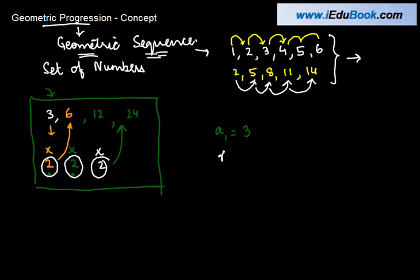This constant number or the ratio, as we call it, by which we need to multiply each of these terms to get a successive term is known as R or a common ratio. In this case, it is 2.